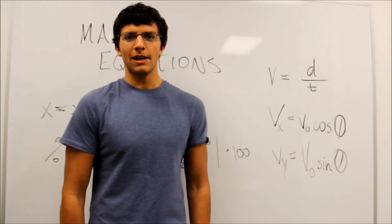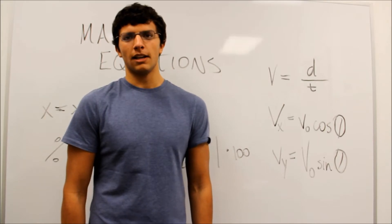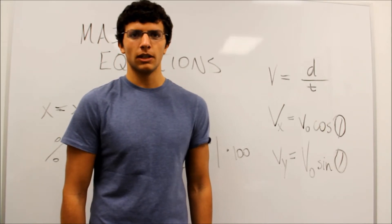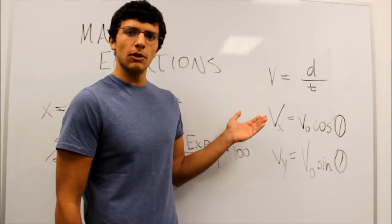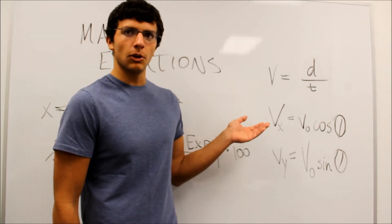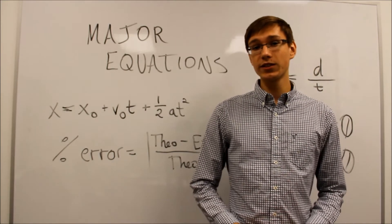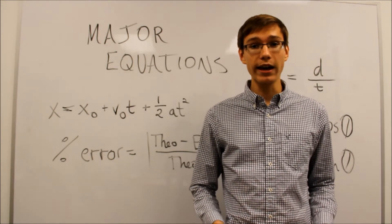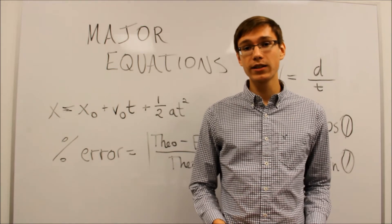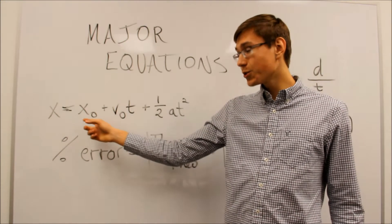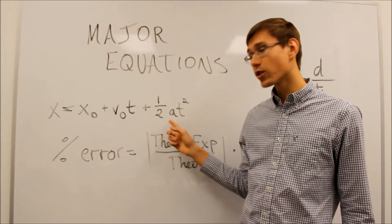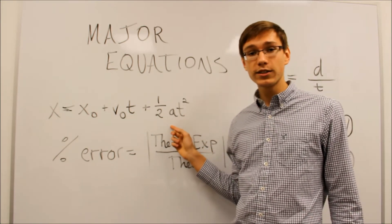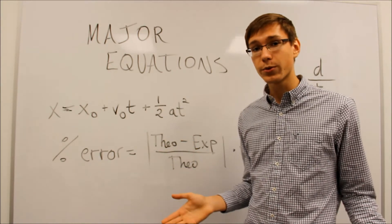The equations used in this lab will be that of kinematics and projectile motion. We need to know the velocity of the dart, therefore we'll be using the equation v equals d over t, or velocity equals distance over time. We also need to find the distance needed to shoot the dart, incorporating our given angle into the equation. We use the kinematics equation: distance equals initial distance plus initial velocity times time plus one-half acceleration times time squared, where acceleration is gravity, or 9.81 meters per second squared.